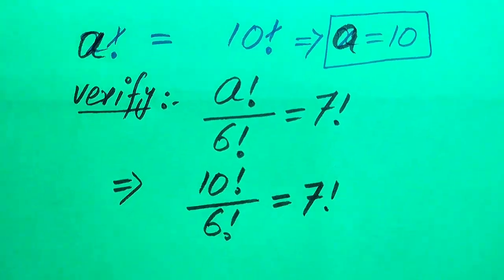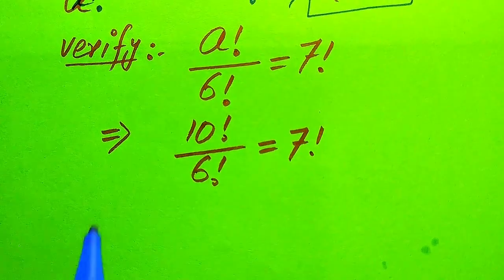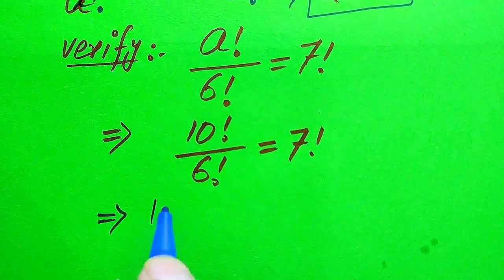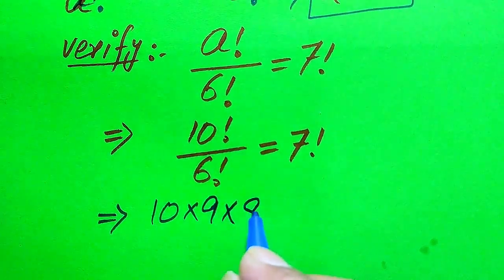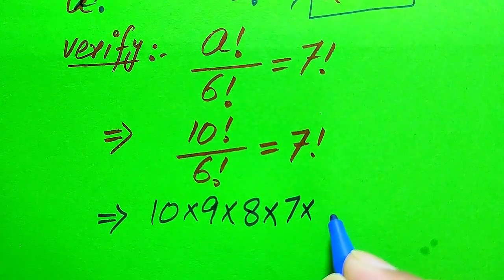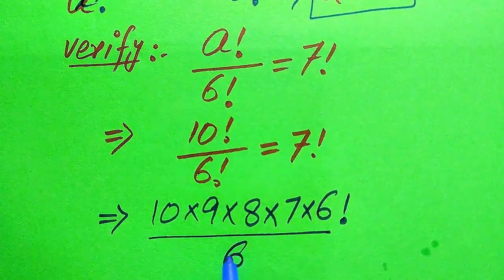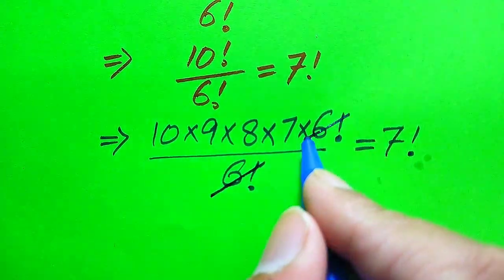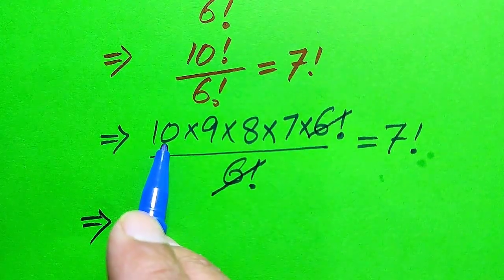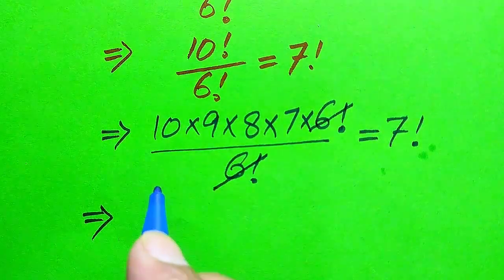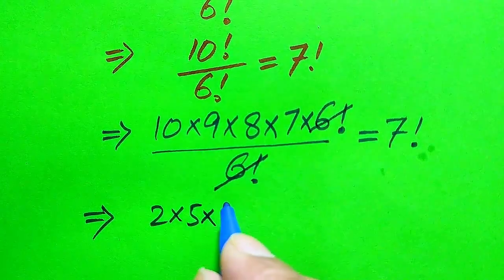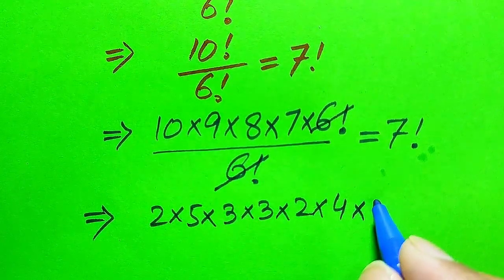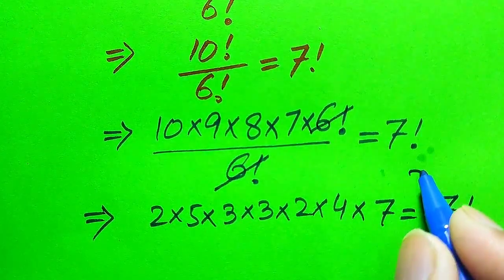For further simplification, we expand 10 factorial down to the 6 factorial sign: 10 × 9 × 8 × 7 × 6 factorial, divided by 6 factorial, equals 7 factorial. The 6 factorial cancels, leaving 10 × 9 × 8 × 7. We then break these down: 10 = 2 × 5, 9 = 3 × 3, 8 = 2 × 4, and 7 remains.